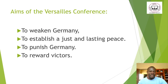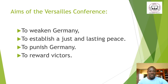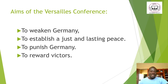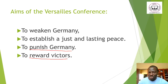The Paris Peace Conference had several aims: number one, to weaken Germany; number two, to establish a just and lasting peace; number three, to punish Germany; and also to reward the victors. We are going to look at how these aims were carried out.